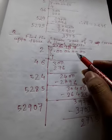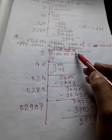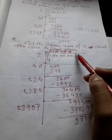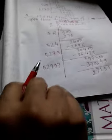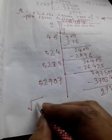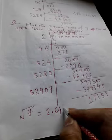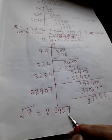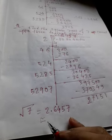So we have found the square root of 7 up to four decimal places. In the question, we have to find the square root of 7 correct up to three decimal places. We have found that root 7 equals 2.6457 — we found this up to four decimal places. Now, this is the approximate symbol, and we have to find correct up to three decimal places.